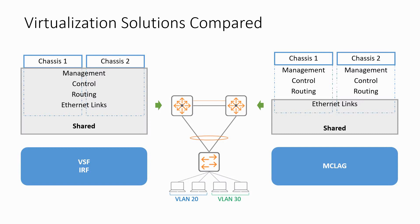Let's compare MCLag with stacking technologies like VSF or IRF. With stacking technologies, there is a single control plane and the data plane is distributed, meaning each switch forwards layer 2 and layer 3 traffic locally, though forwarding decisions are made by the control plane on the master switch. With MCLag, each switch has its own control plane and makes its own layer 2 and layer 3 forwarding decisions, allowing much faster convergence on control plane failure. The challenge with MCLag is that because the switches operate as separate entities, both switches have to be configured individually, which can introduce complexity and risk of configuration failure.